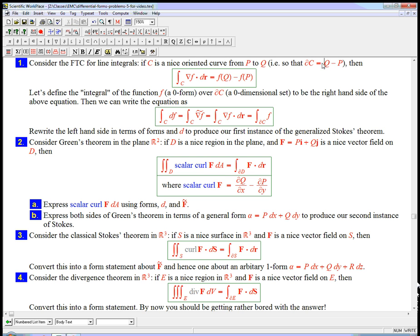And we just say that f sort of evaluated at q minus p is just f of q minus f of p. And in fact, to be a little more fancy, we're actually going to call that the integral of the function, which after all is a zero form, over the boundary of c, which after all is a zero-dimensional set. And we're just going to define it to be: take these values with the appropriate signs.